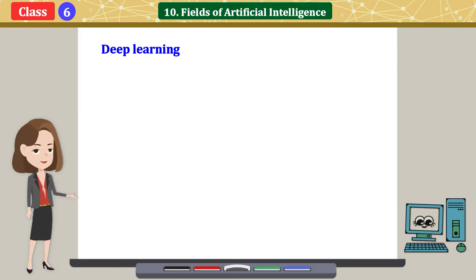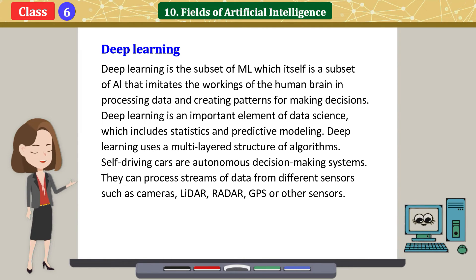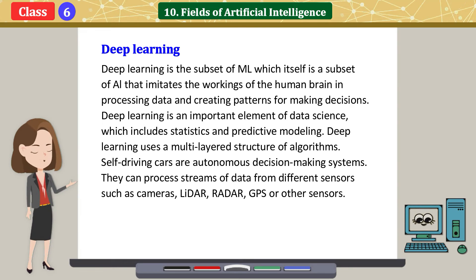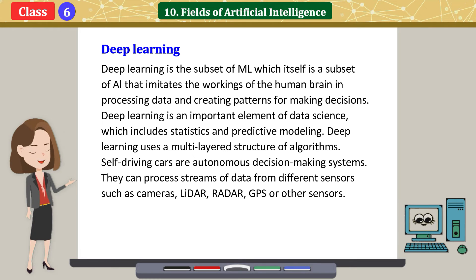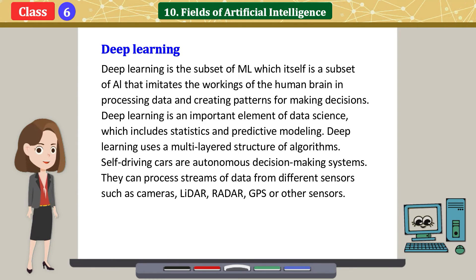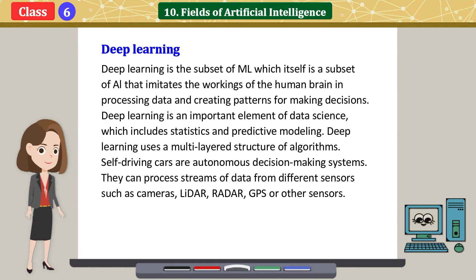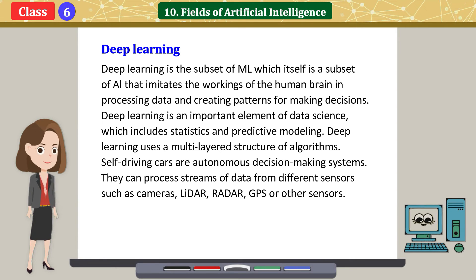Deep Learning is a subset of ML, which itself is a subset of AI, that imitates the workings of the human brain in processing data and creating patterns for making decisions. Deep Learning is an important element of data science, which includes statistics and predictive modeling. It uses a multi-layered structure of algorithms. Self-driving cars are autonomous decision-making systems that can process streams of data from different sensors such as cameras, LiDAR, radar, GPS, or other sensors.